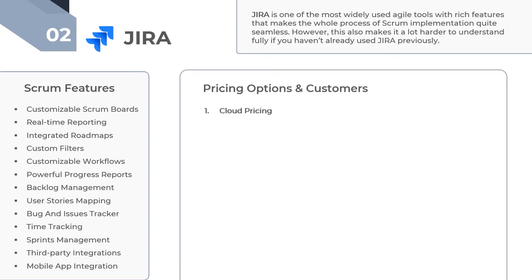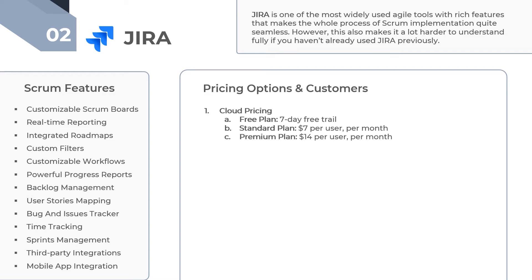Jira comes with a free trial of 7 days, so go ahead and explore. Jira software offers a choice of either cloud or on-premise hosting. For cloud-based deployment, companies with a small team of up to 10 users can take advantage of the free plan, which includes basic features. For larger teams, Jira offers two pricing plans: the standard plan costs $7 per user per month, and the premium plan costs $14 per user per month. For on-premise deployment, there are two pricing plans — Server and Data Center. The server license is a one-time payment and the data center licensing is an annual payment; for both, the price varies depending on the number of users.